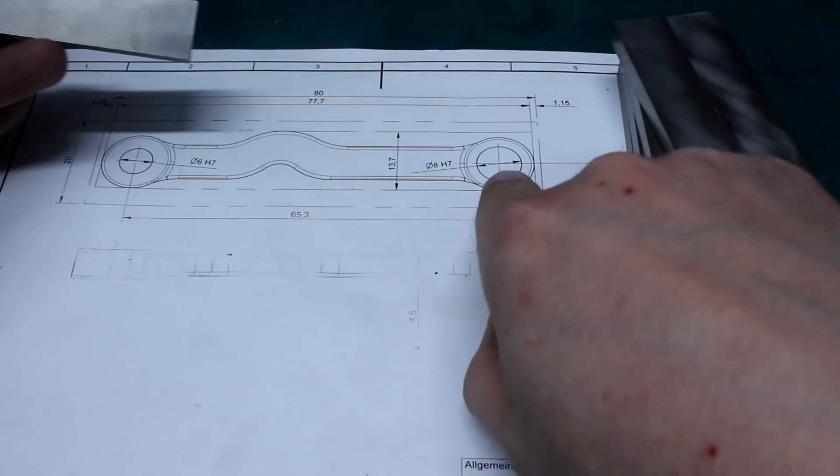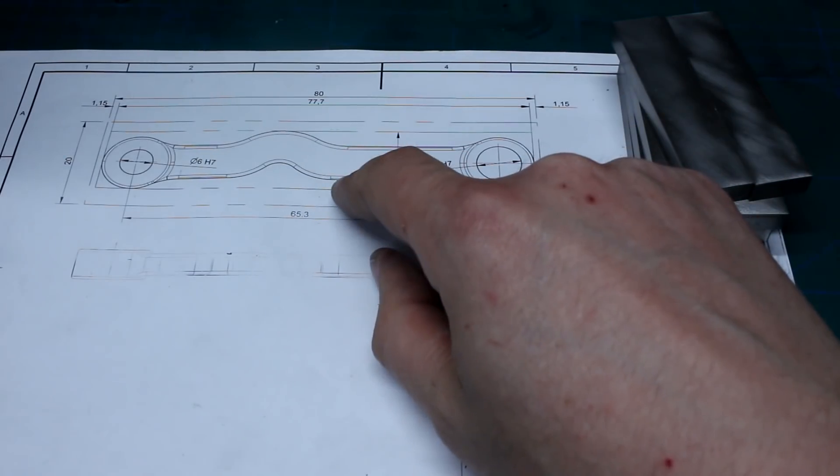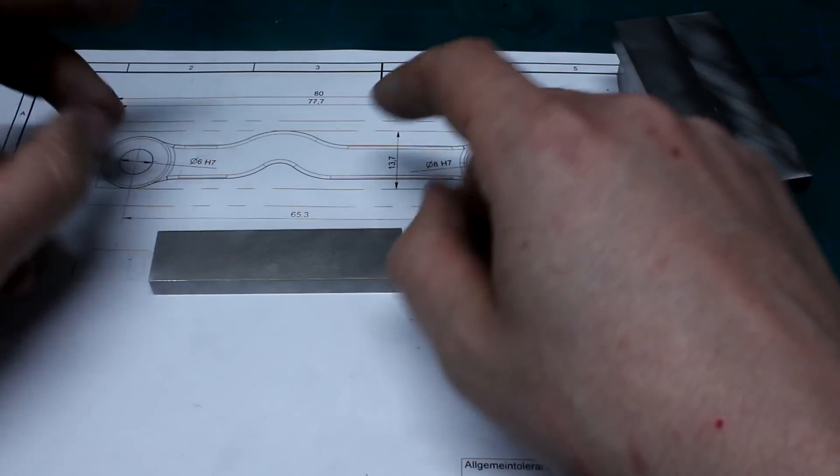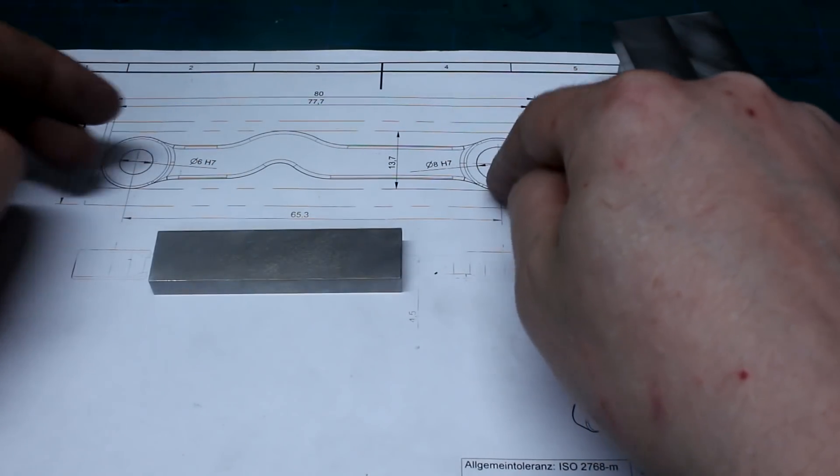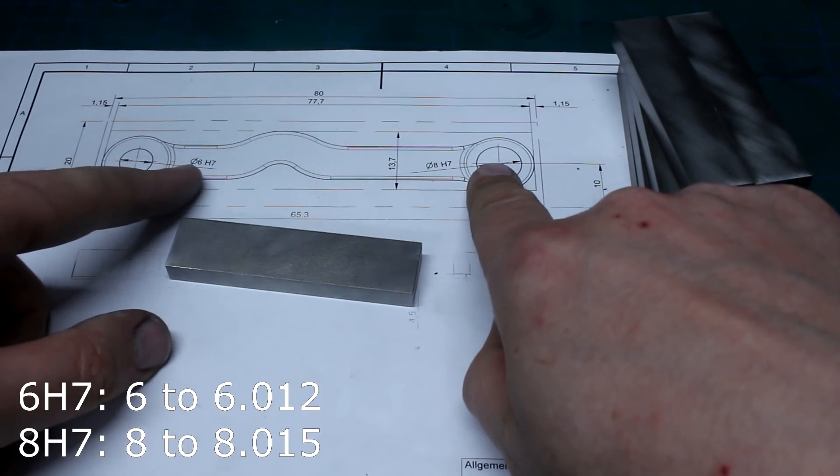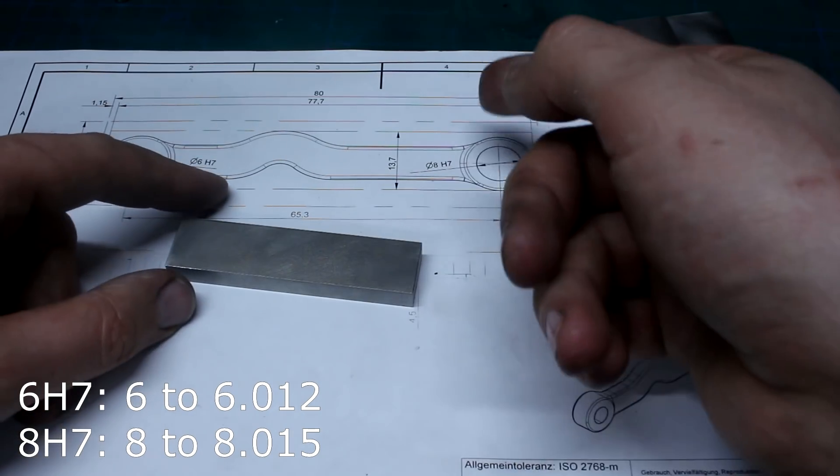Due to the shape and the number of radii on here, we're going to machine most of it on the CNC router. The only thing that we're going to do manually is we will put those two holes in 6H7 and 8H7, which are both reamed fits plus zero plus something like 20 microns.